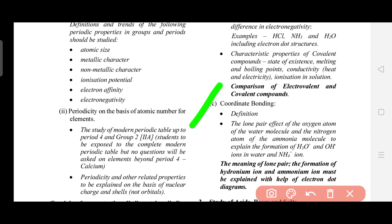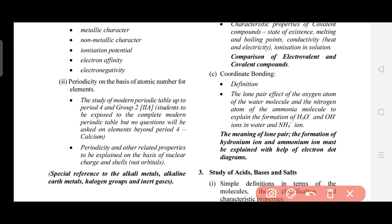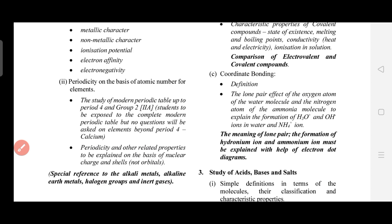Now for Coordinate bonding — the third type — you need to study its definition, the meaning of loan pair, and how coordinate bonds are formed. Specifically, the formation of hydronium and ammonium ions are must-study topics that regularly appear in board exams. I have discussed various question types on this in my other videos — do check those out. This concludes Chapter 2, with almost no majority changes.